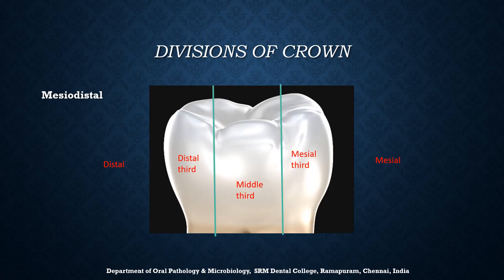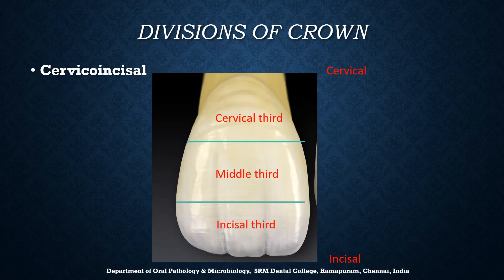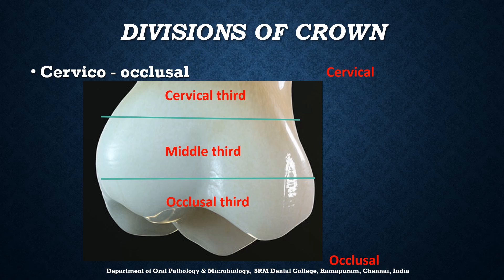For the buccal surface of posterior teeth viewed from the mesiodistal direction, it can also be divided into mesial third, middle third, and distal third. The crown of anterior teeth in the cervico-incisal direction can be divided into cervical third, middle third, and incisal third. Similarly for posterior teeth along the cervico-occlusal direction, it can be divided into cervical third, middle third, and occlusal third.